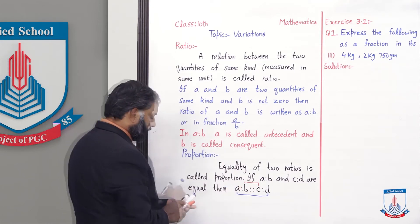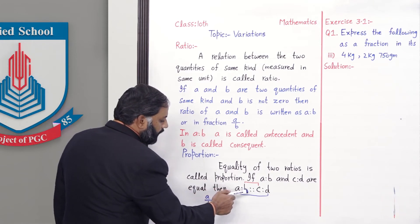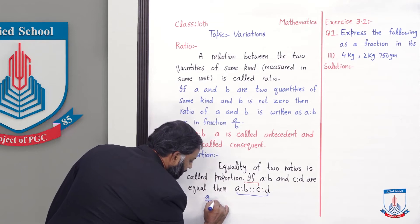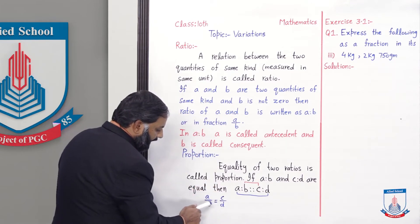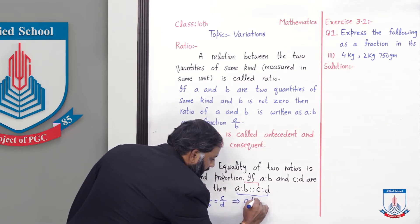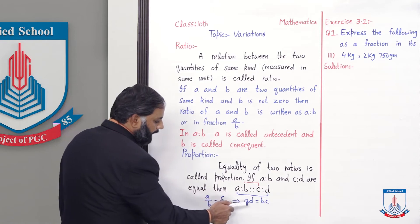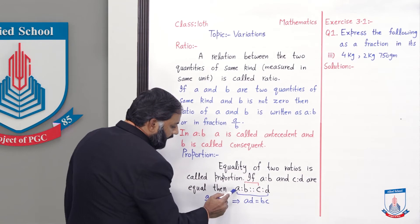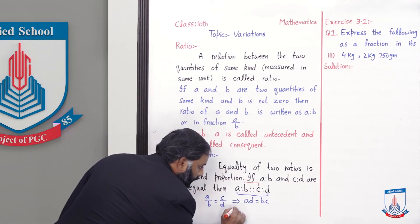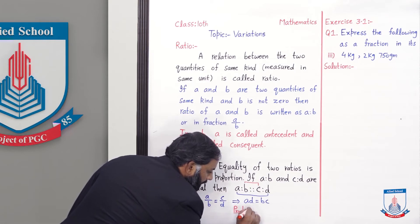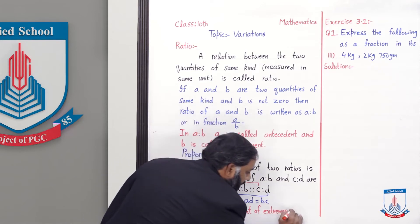اب A:B کو A/B بھی لکھ سکتے ہیں، تو A/B = C/D۔ اب اسکو cross multiply کریں تو AD = BC آجائے گا۔ AD extreme quantities ہیں اور BC mean quantities ہیں، تو اس سے یہ ثابت ہوا کہ product of extremes is equal to product of means.